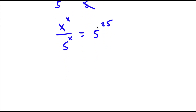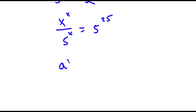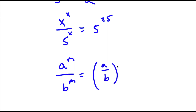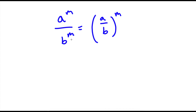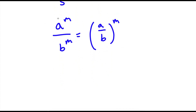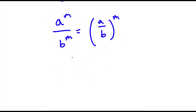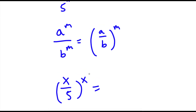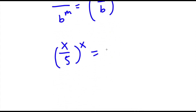Now, if I have something in the form a to the power of m over b to the power of m, this is equal to a over b to the power of m. So in this case, x to the power of x over 5 to the power of x is going to equal x over 5 to the power of x, which is equal to 5 to the power of 25.